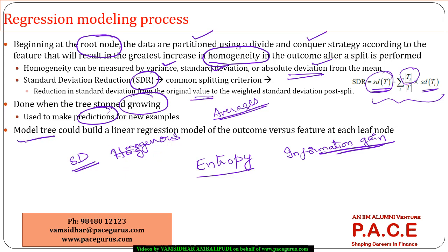In a model tree, there is one more step: instead of just taking plain averages at each leaf node, we build a linear regression model based on the data at each leaf node, considering both the dependent variable and independent variables at each leaf. That is how the full model tree process works.